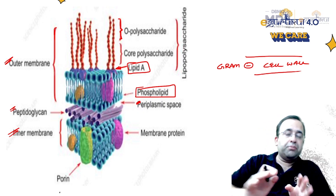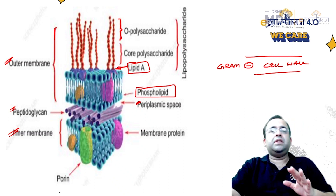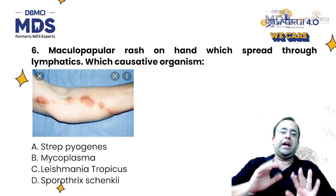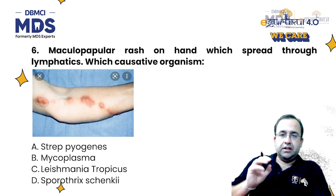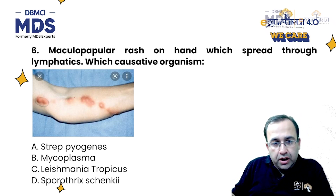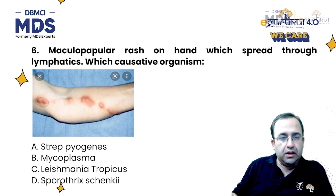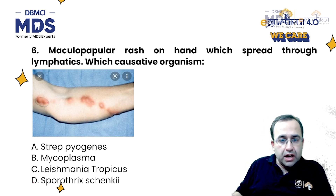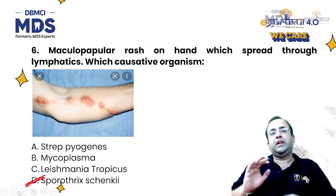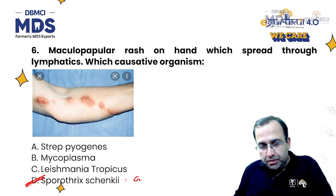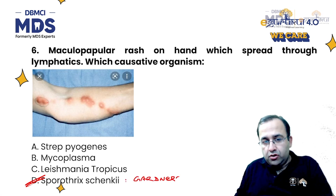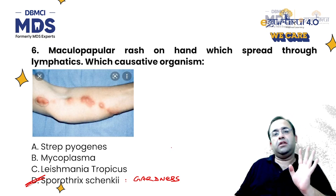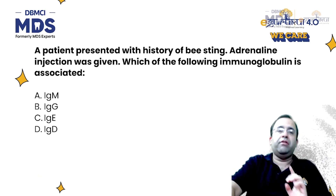Next question — these are potential exam questions and the purpose of this session is to review repeatedly asked topics for your INI exam. This next question is straightforward: there is a rash on the hand which spreads through lymphatics, associated with Sporothrix schenckii. The examiner can also give a history of a gardener showing a maculopapular rash, associated with rose thorn pricks — that is Sporothrix schenckii, which spreads through lymphatics.